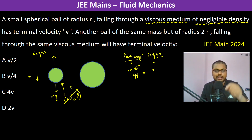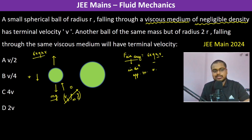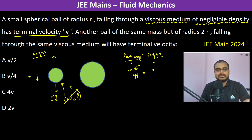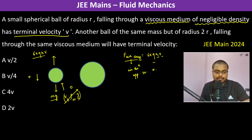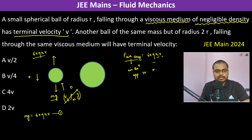So there are only two forces acting: mg and 6π η r V. Since the ball has reached terminal velocity, meaning its speed will no longer increase or decrease, the net force is zero. Therefore we equate both: mg = 6π η r V. This is the first equation. This ball has mass m.